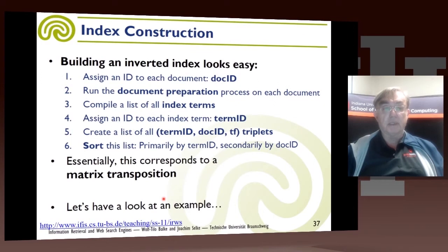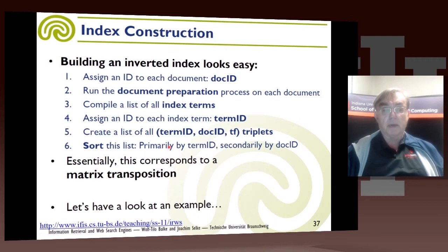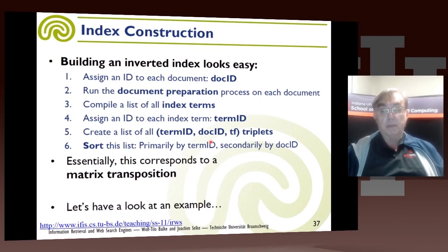Constructing the index is actually pretty straightforward — it's mainly a question of performance issues to get it built properly. You assign integers to every document and every term, which are the labels of the rows and columns of the matrix. Then you create a list of triplets: term ID, document ID, and term frequency, with attached location and other types of information you may want to keep. Then you sort this list on term ID, which allows you to associate all the triplets for the same term ID together.